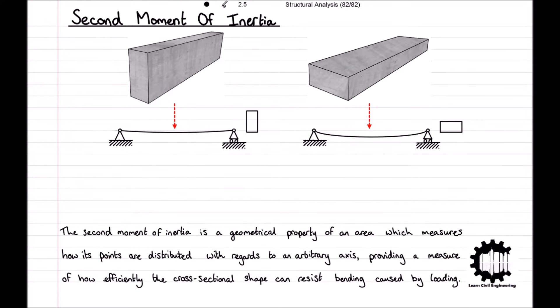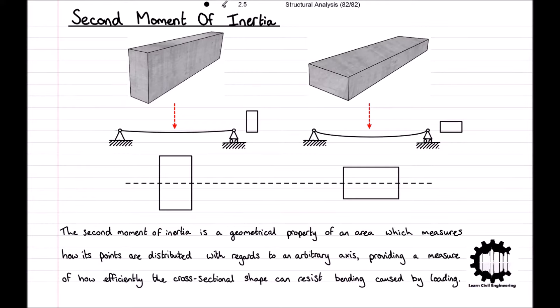If the area of the region is close to the arbitrary axis, there will be a smaller bending moment. Looking back at the example of our two beams, if we consider that the bending moment makes the intersection rotate along a horizontal axis, the area of the beam on the left is further away from the horizontal axis than the area of the beam on the right. Therefore, the second moment of inertia around the horizontal axis is greater for the beam on the left, resulting in a greater stiffness.